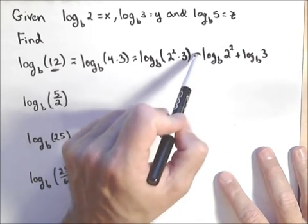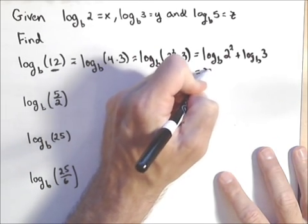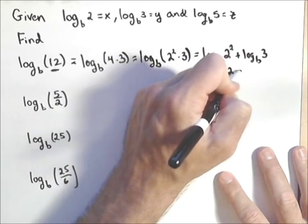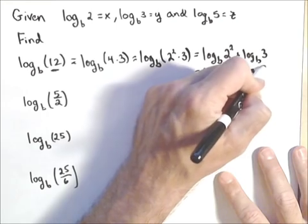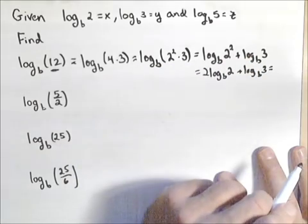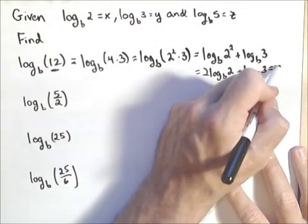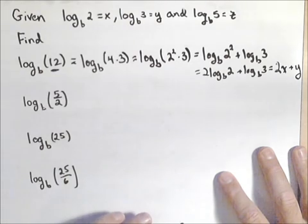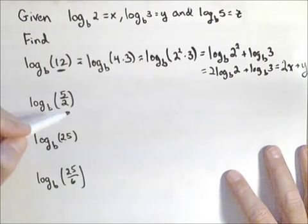But remember, I can pull that exponent out front using that third property of logs we saw. So I can write that as 2 log base b of 2 plus log base b of 3, which equals, log base b of 2 is x, so 2 times x plus y. So that's what we want to try and do in each of these.